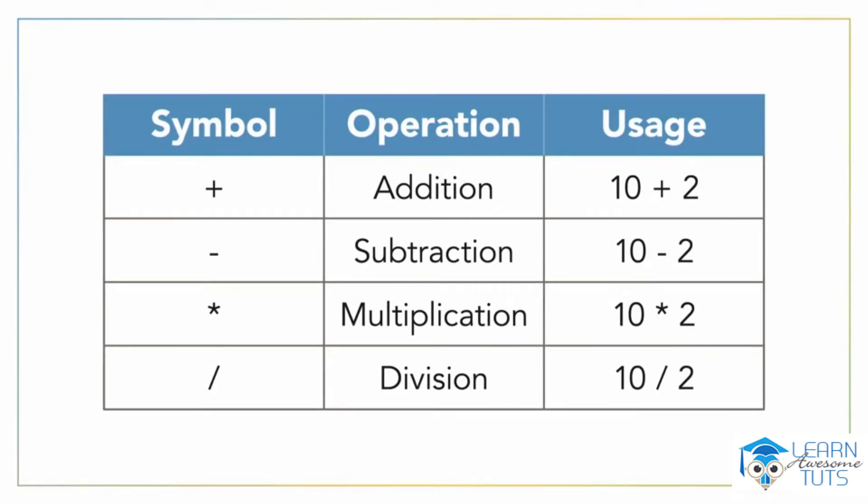The plus symbol is used for addition, minus for subtraction, an asterisk or star to represent multiplication, and finally a forward slash for division. These are known as arithmetic operators, as they take numbers for their input and perform an arithmetic operation.